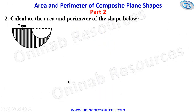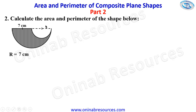We go to problem two. Calculate the area and perimeter of the shape below. This shape is a combination of two semicircles, one larger than the other. The larger semicircle has a radius of 7 centimeters, and the radius of the larger semicircle is the diameter of the smaller semicircle. To calculate the area, this is a case of subtraction — we find the area of the entire large semicircle, then the area of the small semicircle, and find the difference. The radius of the large semicircle is capital R = 7 centimeters, and since the diameter of the small semicircle is 7, the radius will be 3.5, that is 7 divided by 2.